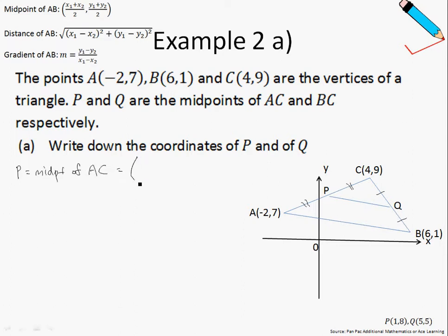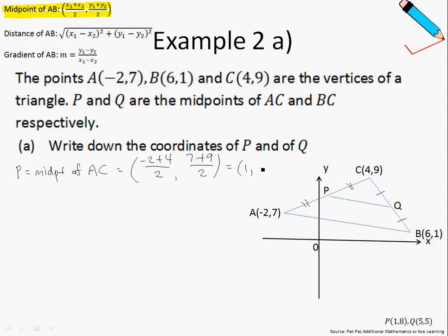In order to calculate the midpoint, I will use the midpoint formula, highlighted over here. The midpoint formula says I will take the x-coordinate of A, which is negative two, plus the x-coordinate of C, which is four, divided by two, comma, the y-coordinate of A, which is seven, plus the y-coordinate of C, which is nine, divided by two. Pressing this into my calculator, I arrive at (1, 8). That wasn't too difficult, right?